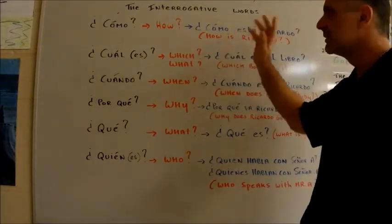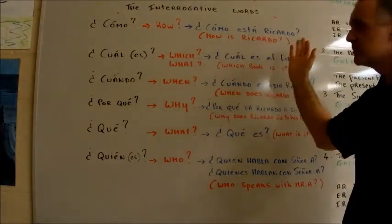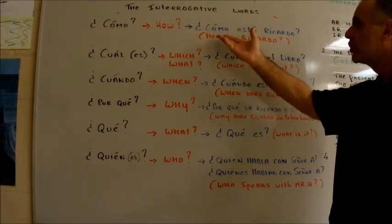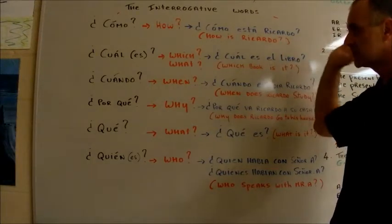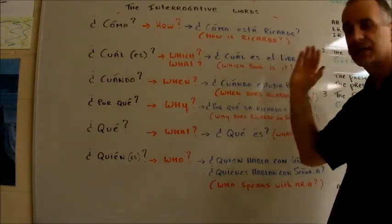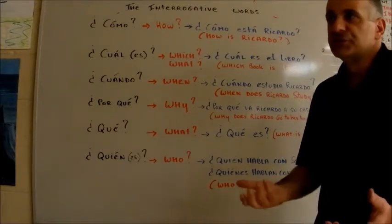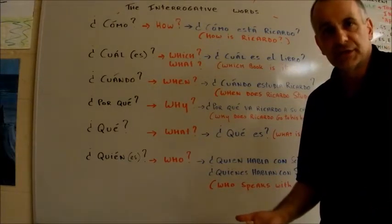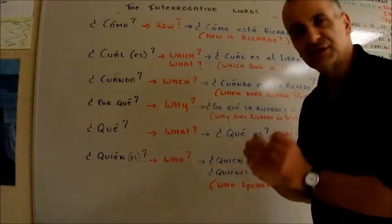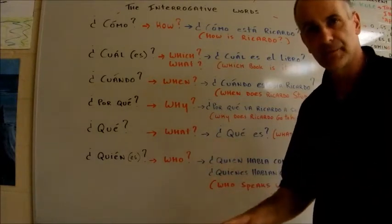Como. Alright. I have a little example here. The example that I have here is como esta Ricardo. How is Ricardo? Okay? Simple example here. Basic. I told you that before and I'm going to say it again. The simpler, the better.